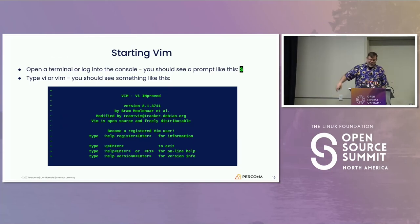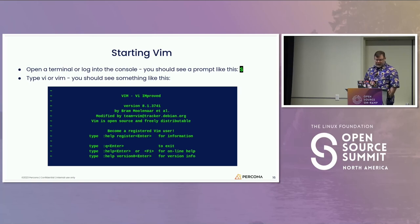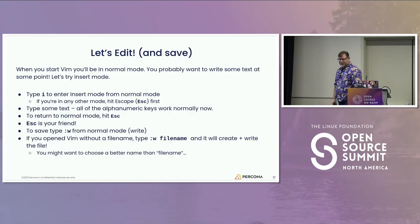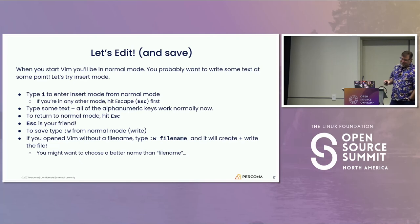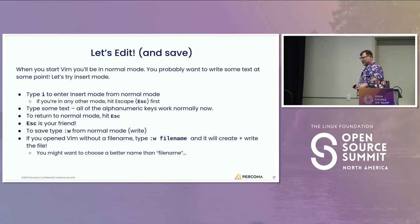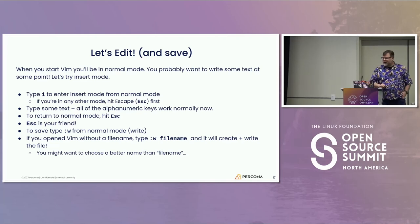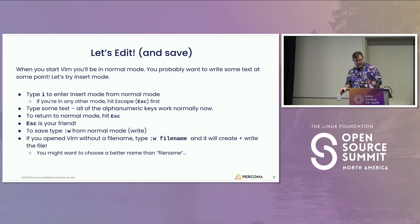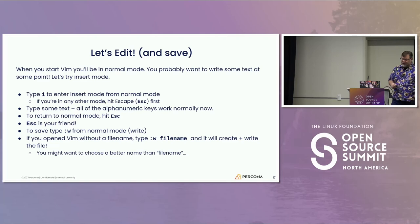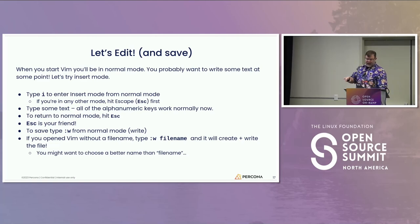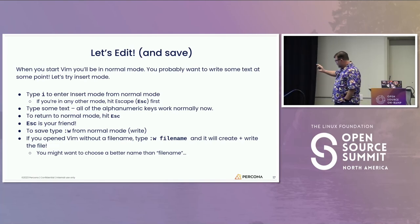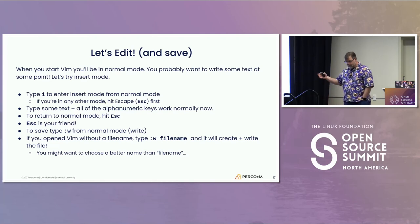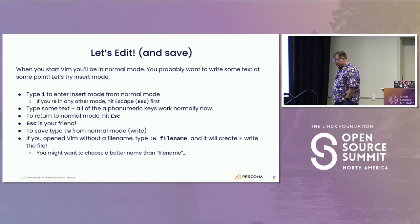To start VIM, open a terminal or console, type VIM, and you should see the VIM start screen. So let's talk about editing. When you open a file, you open a buffer in VIM. Type 'i' to enter insert mode and now you're typing and working with text. To return to normal mode, hit Escape. To save, hit colon W. If you opened VIM without a file, you can choose a file name at command mode with colon W and the file name.